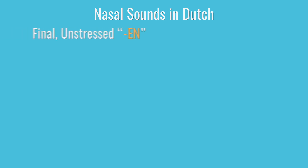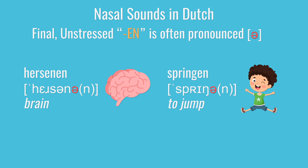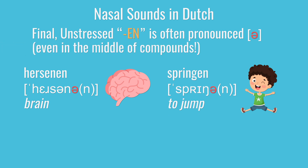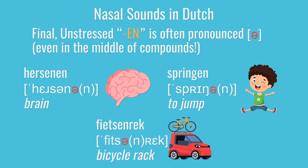Our next topic has to do with nasal sounds, mostly with the letter n. First off, the controversial final n. You're going to see a lot of words ending in the letters e, n. That spelling at the end of a word is usually unstressed. When that happens, in typical conversational speech, the n in that syllable is often silent. That gives you words like hersenen and springen, and even compound words where you get the unstressed n syllable in the middle, like fietsenrek. You're not hearing hersenen, or springen, or fietsenrek, but rather hersenen, springen, and fietsenrek.